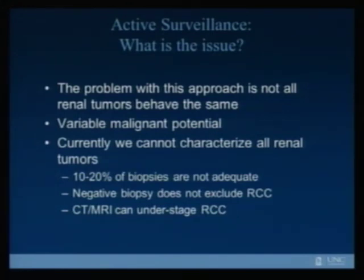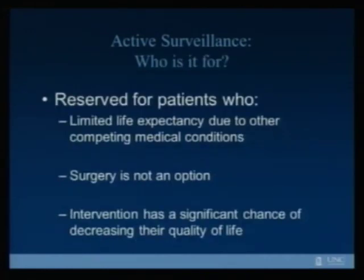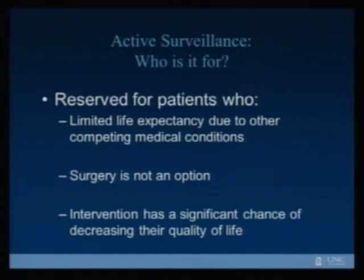The problem is that not all renal tumors behave the same, and it's really difficult to tell which ones have malignant potential and which are benign. We do have biopsies to aid our decision-making, but a negative biopsy doesn't necessarily mean it's not a renal cell carcinoma. Also, CT, MRI, and imaging can actually under-stage renal cell carcinoma. Active surveillance is reserved mainly for patients with limited life expectancy due to competing medical conditions, or where surgery is not an option. But this is a shared decision between the patient and the surgeon — it's not just the surgeon making this decision.